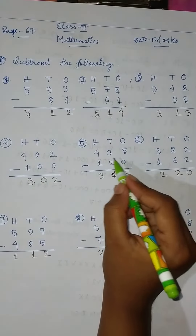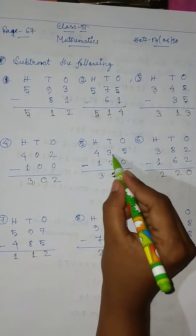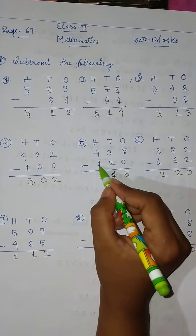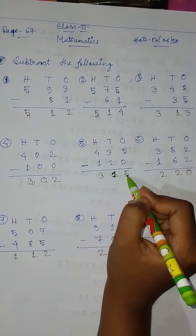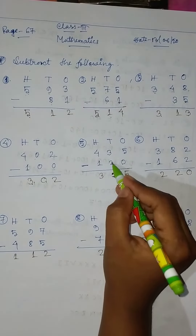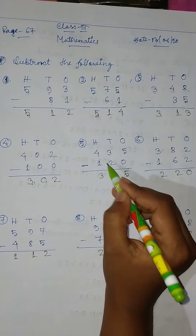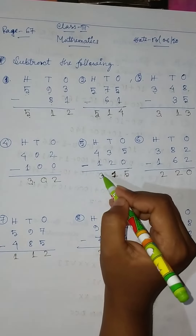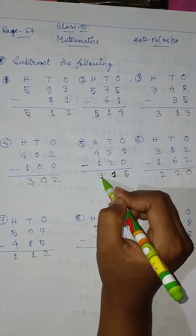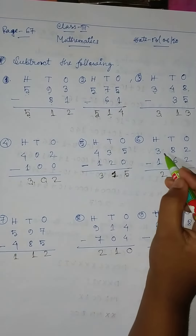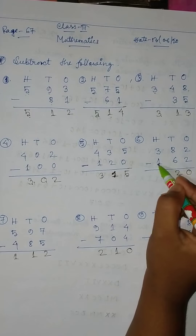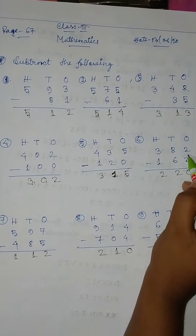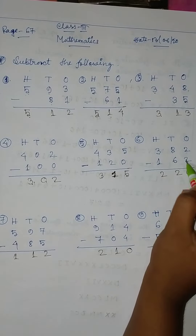Then 435 minus 120: 5 minus 0 equal to 5, 3 minus 2 equal to 1, and 4 minus 1 equal to 3. Okay, then 382 minus 162: 2 minus 2 equal to 0.